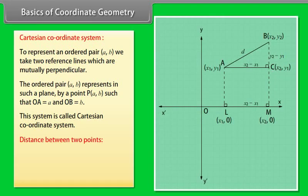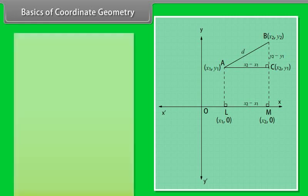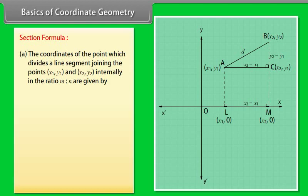Distance between two points: The distance between two points A(X1, Y1) and B(X2, Y2) is length AB equals the square root of (X2 minus X1) squared plus (Y2 minus Y1) squared.